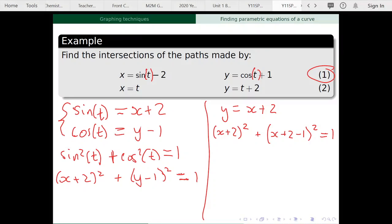minus 1 all squared equals 1. And we get x plus 2 all squared plus x plus 1 all squared equals 1.